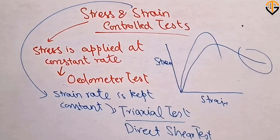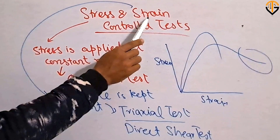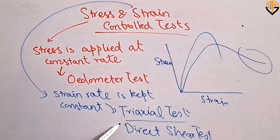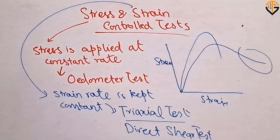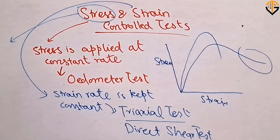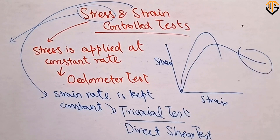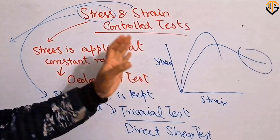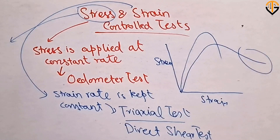That is why in the laboratory, most tests are performed under strain control conditions, as highlighted by the examples above. Stress controlled tests are basically very close to field conditions. The major limitation of stress control tests remains that we cannot obtain the post-peak behavior of the material.